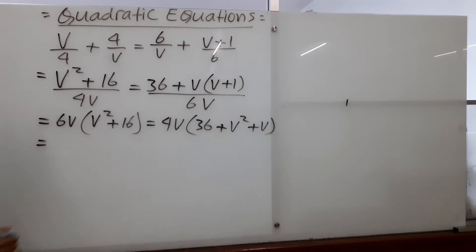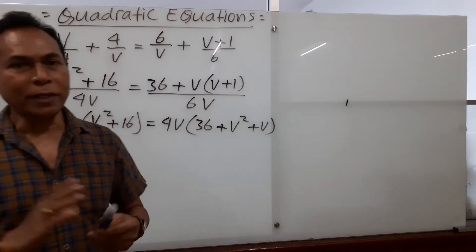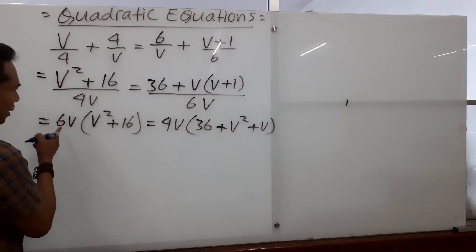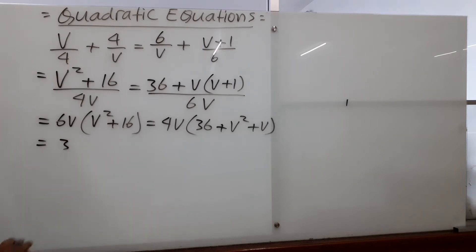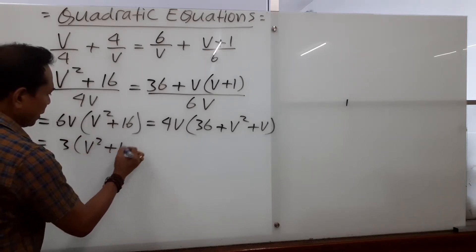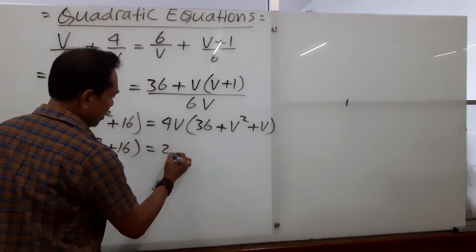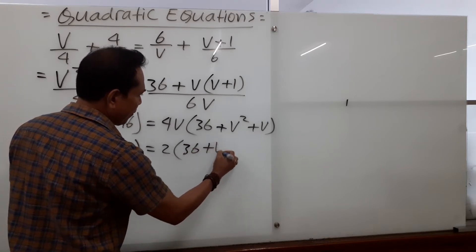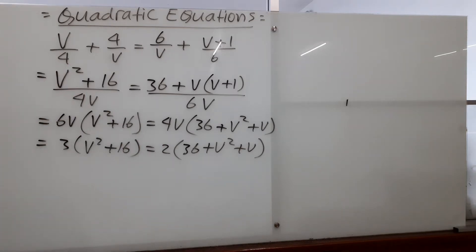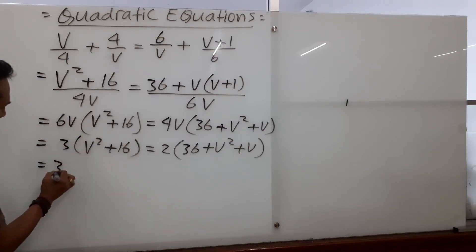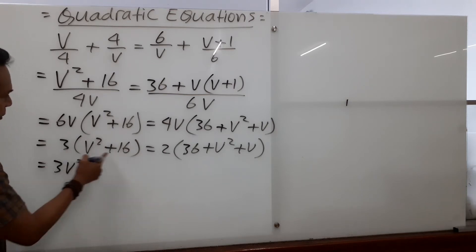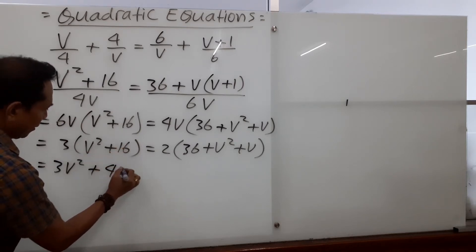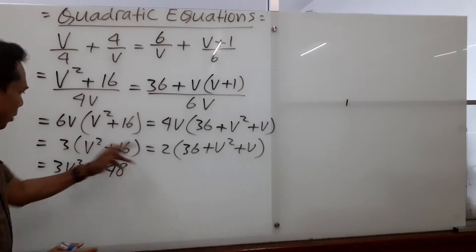We have 6 here and 4 here. These have a common factor — if we use 2, then 6 becomes 3 and 4 becomes 2. The v's cancel out. So we open the bracket and we have 3 times v squared plus 16 on the left, and 2 times 36 plus v squared plus v on the right. Then 3 times v squared becomes 3v squared, and 3 times 16 is 48.